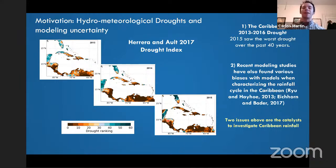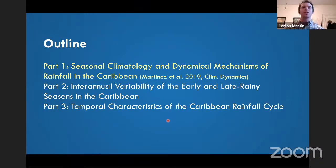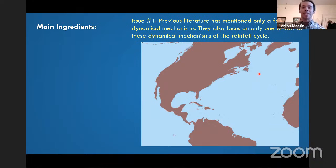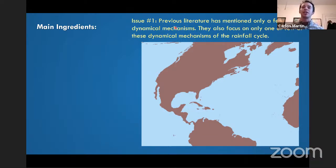All of that combined made me want to look at whether there is a comprehensive understanding of the observed rainfall cycle in the Caribbean and what gaps could be researched. This goes into part one of this three-part presentation — the seasonal climatology and dynamical mechanisms of Caribbean rainfall. When I looked at the literature, there is a laundry list of mechanisms, because of how geographically unique this region is, sandwiched between mid-latitude and tropical forcings with small to large-scale features.